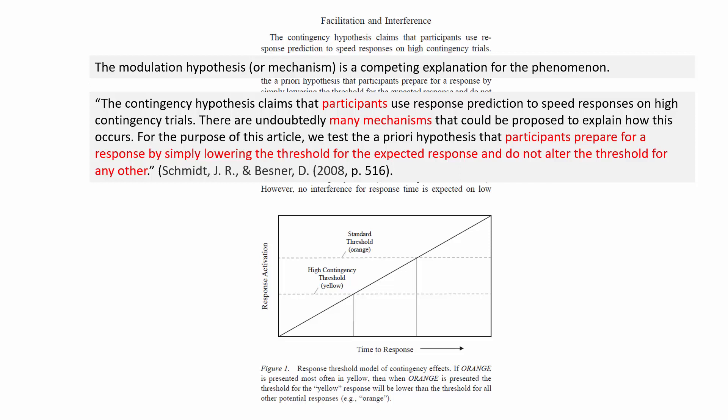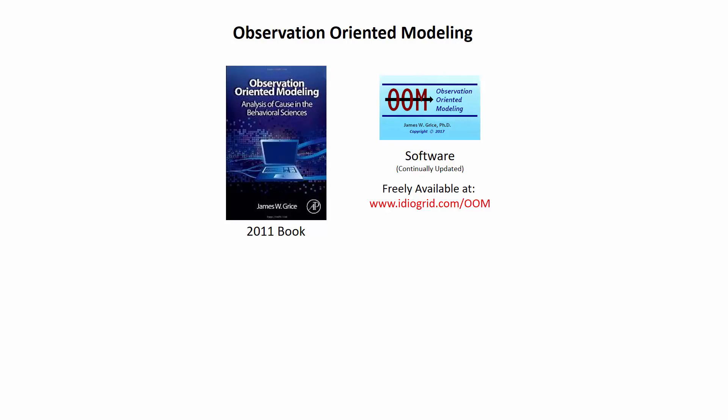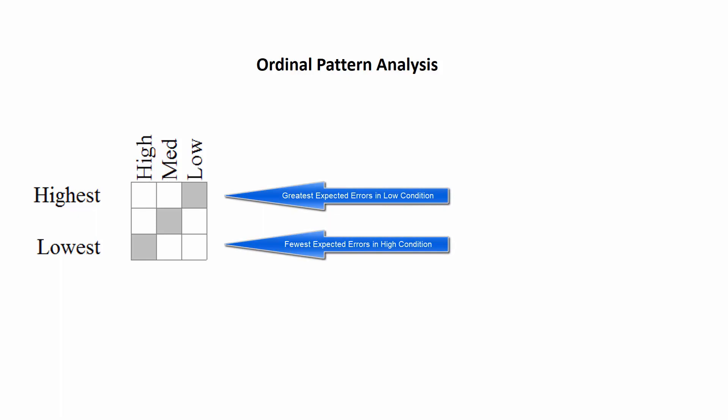Notice there is no mention of a population or population means — only participants are mentioned along with the causal mechanism explaining their individual behaviors. With this in mind, an analysis more suitable for drawing an inference to best explanation needs to be conducted, and one can be found in the observation-oriented modeling software. We refer to this analysis as an ordinal pattern analysis, and we start by setting up the expected ordinal pattern for the errors.